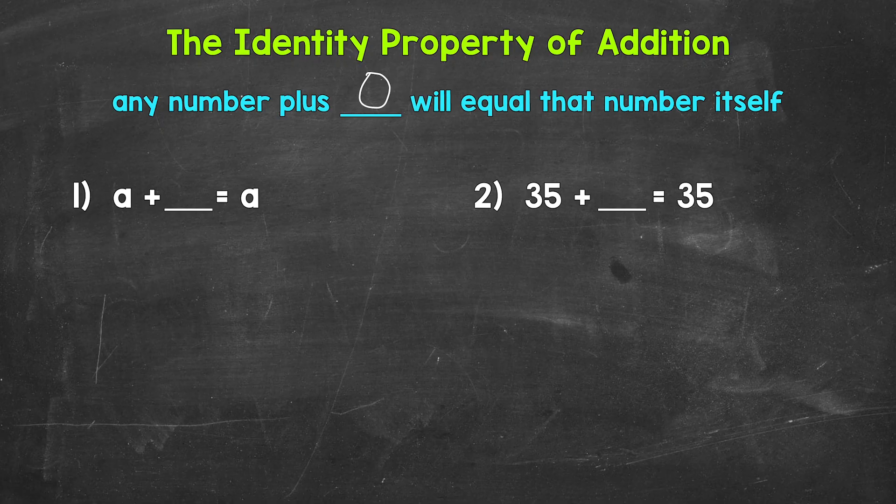Let's jump into number one, where we have a plus what equals a? Well, a plus zero equals a. 'a' just represents any number. We can plug in any number for a and the identity property of addition will apply — any number plus zero will equal that number itself.